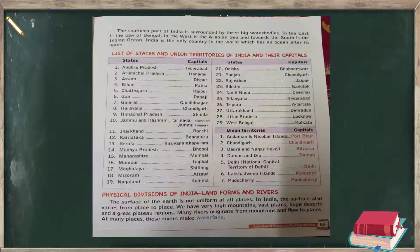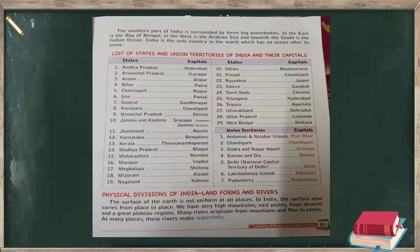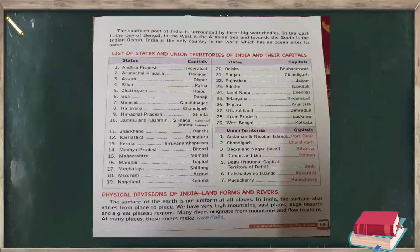Continuing the list: Karnataka – Bengaluru; Kerala – Thiruvananthapuram; Madhya Pradesh – Bhopal; Maharashtra – Mumbai; Manipur – Imphal; Meghalaya – Shillong; Mizoram – Aizawl; Nagaland – Kohima; Odisha – Bhubaneswar; Punjab – Chandigarh; Rajasthan – Jaipur.